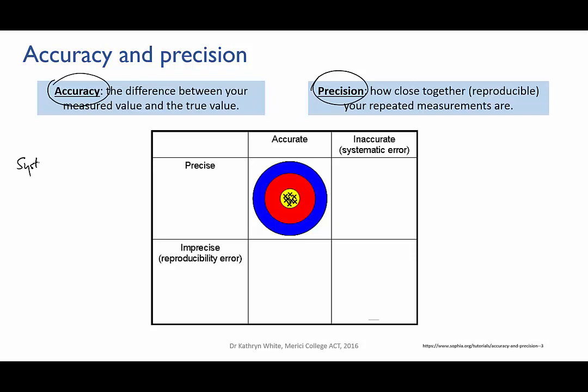Systematic error affects accuracy. Accuracy is the difference between your measured value and the true value. Random error affects precision, and it may also affect accuracy. Precision is how close together or reproducible your results are if you measure the same thing several times.